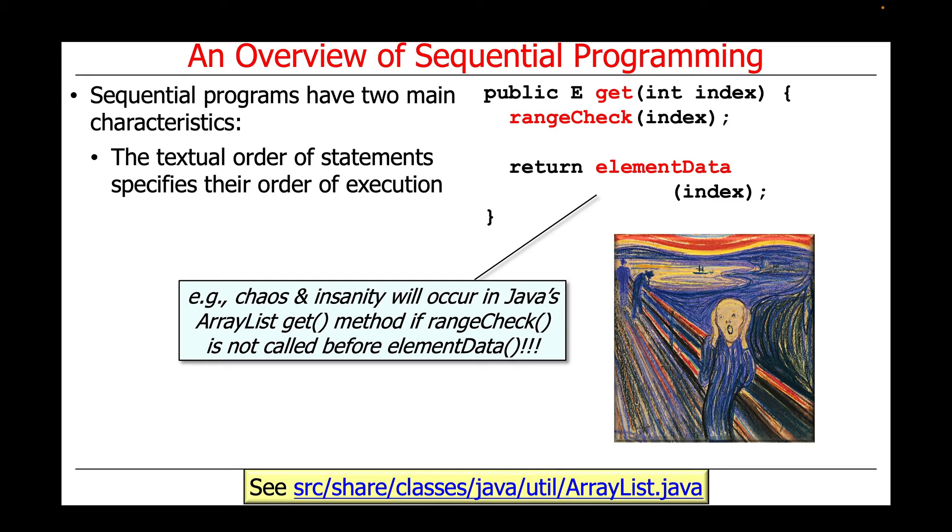Needless to say, chaos and insanity will occur in Java's ArrayList get implementation if the range check method is not called before element data. If some compiler reordered these instructions so that element data went before range check, bad things would happen.